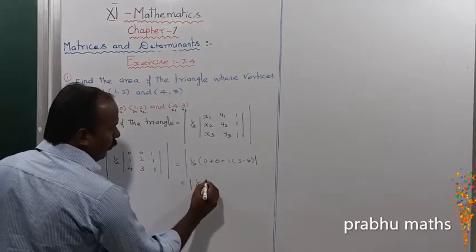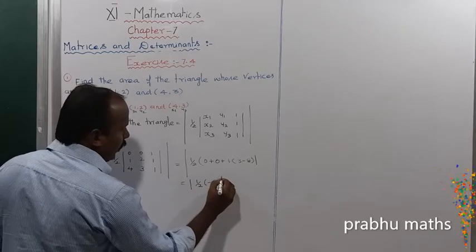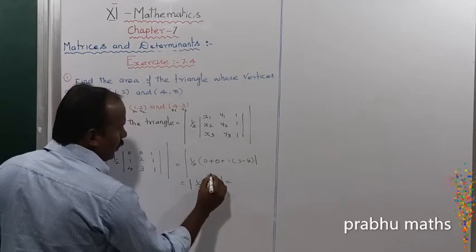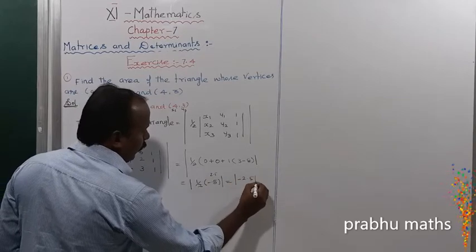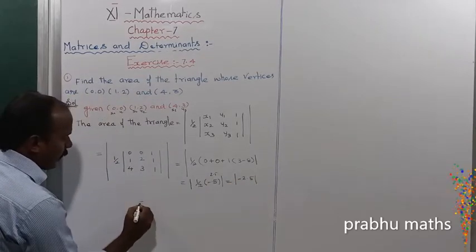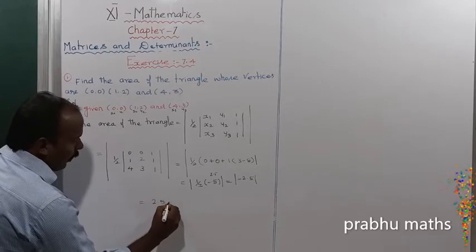Modulus of 1/2 times negative 5. That equals 2.5. The modulus of negative 2.5 equals positive 2.5 square units.